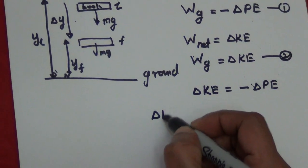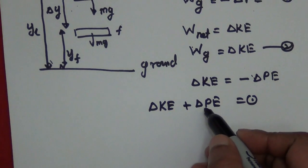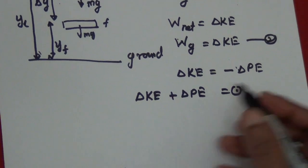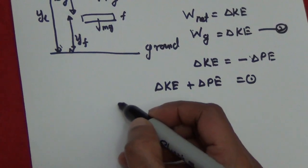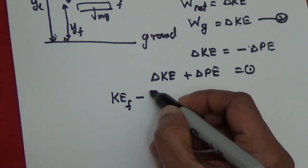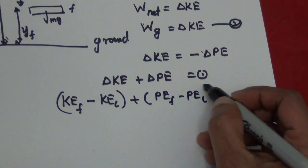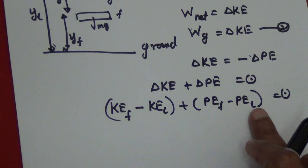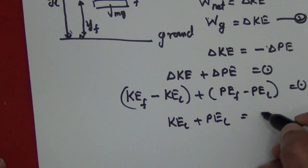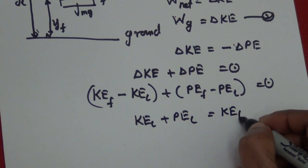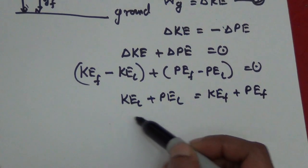So I can rewrite that as: change in kinetic energy plus change in potential energy equals zero — meaning there is no energy loss. Expanding: (KE_final − KE_initial) + (PE_final − PE_initial) = 0. Grouping the initial terms on one side gives: KE_initial + PE_initial = KE_final + PE_final.